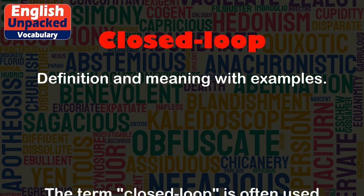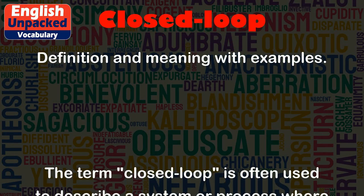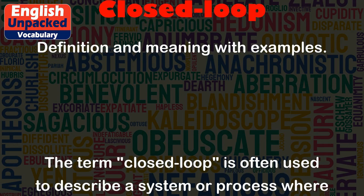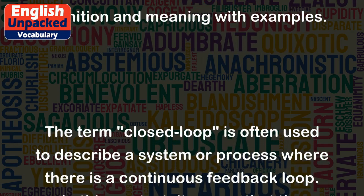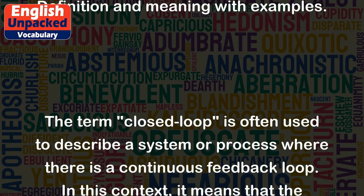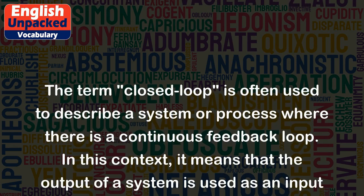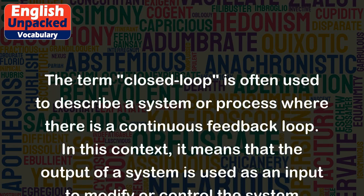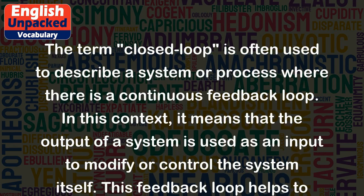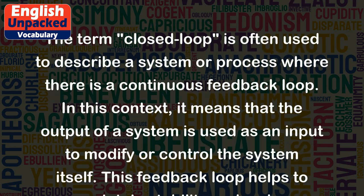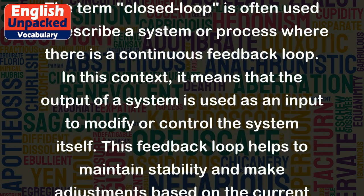Closed Loop. The term 'closed loop' is often used to describe a system or process where there is a continuous feedback loop. In this context, it means that the output of a system is used as an input to modify or control the system itself.